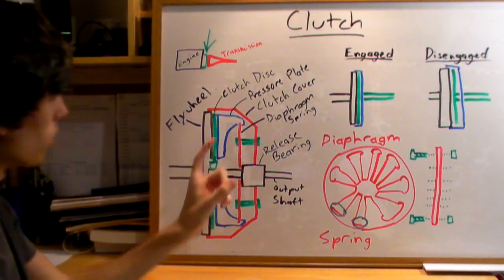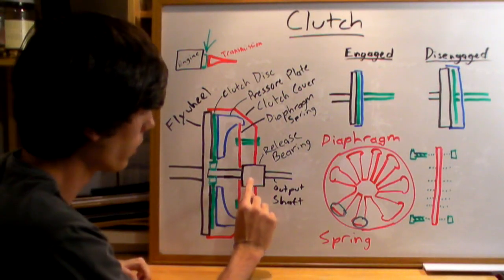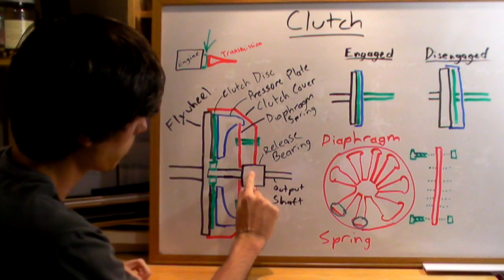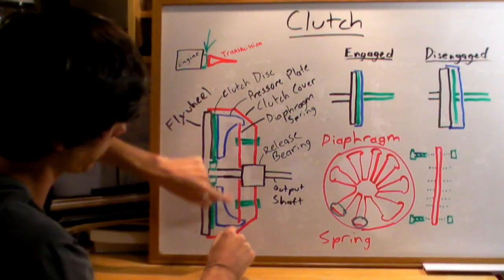So how does it release from the clutch? Well, when you push in the clutch pedal, it forces this release bearing right here against this diaphragm spring.